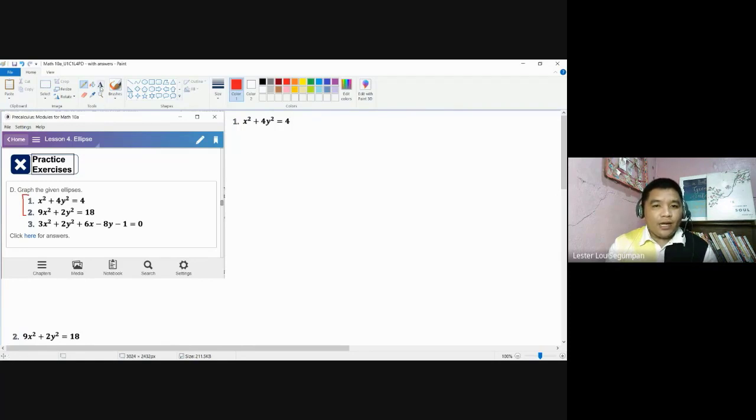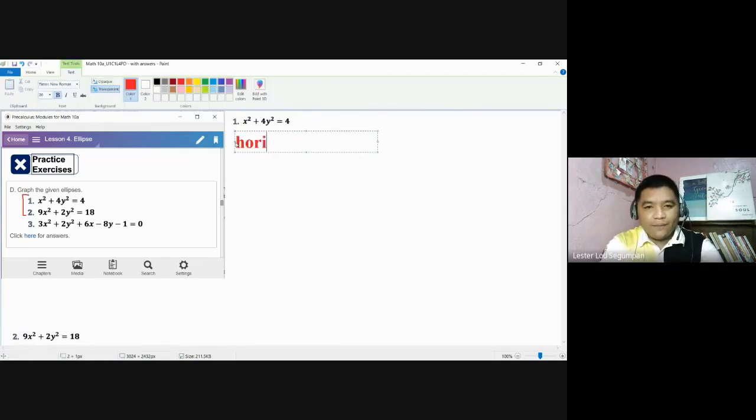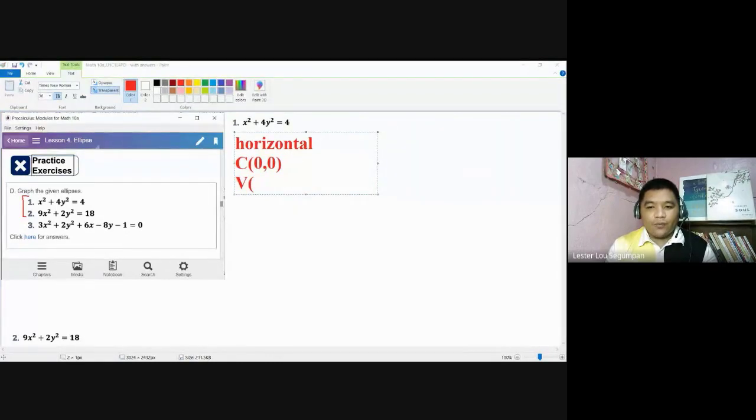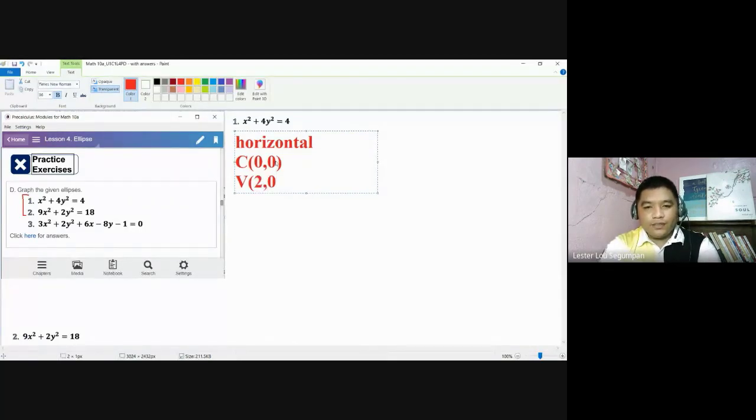For number one, it is actually a horizontal ellipse centered at 0, 0. And we have the foci, I mean the vertices first. The vertices, already given with the formula, we'd actually already solved it in the previous video. So, 2 and 0, this is your vertex number one. You have your at 2 and 0, and then your vertex 2 is at negative 2 and 0.